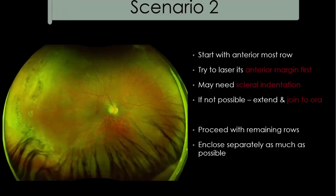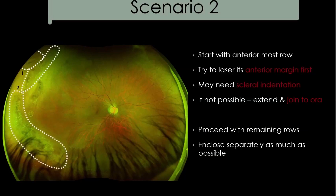For a patient with multiple rows of lattices, always start with the most anterior row first. Use scleral indentation and try to laser the anterior margin of the lattice first. If that is not possible, laser it posteriorly and extend anteriorly to the ora. Then proceed with the remaining rows from anterior to posterior, enclosing lesions separately as much as possible.